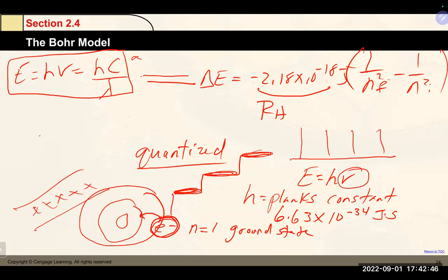In response to a student question: n is the principal quantum number — it's basically the energy level where the electron either started or ended its transition. This equation is for electrons transferring from one spot to the next. There is a separate equation in the lab that corresponds to the energy level with the electron just sitting there without transitioning, which has the atomic number associated with it.